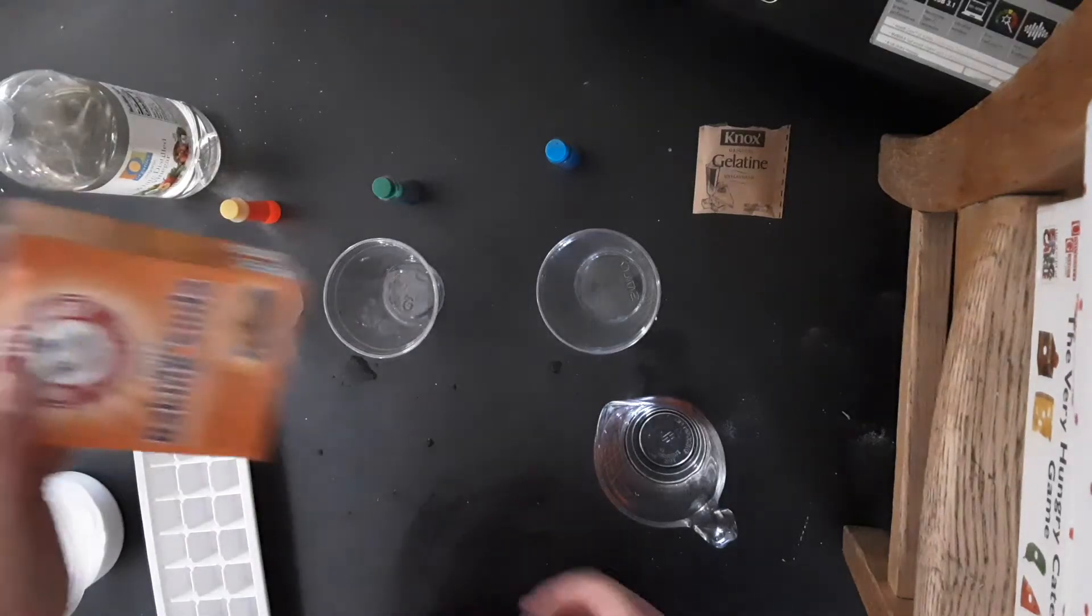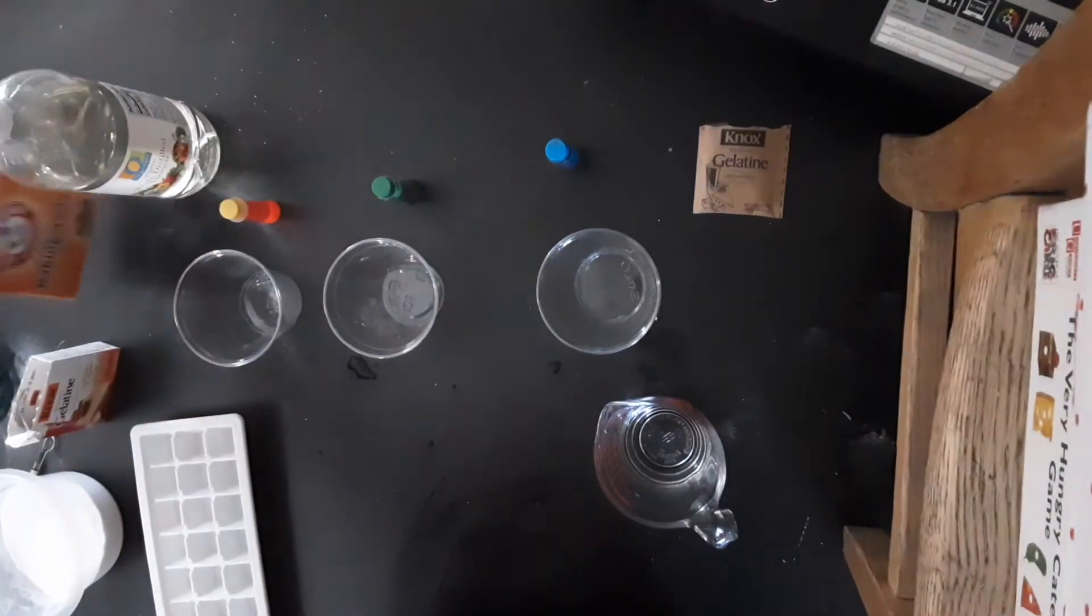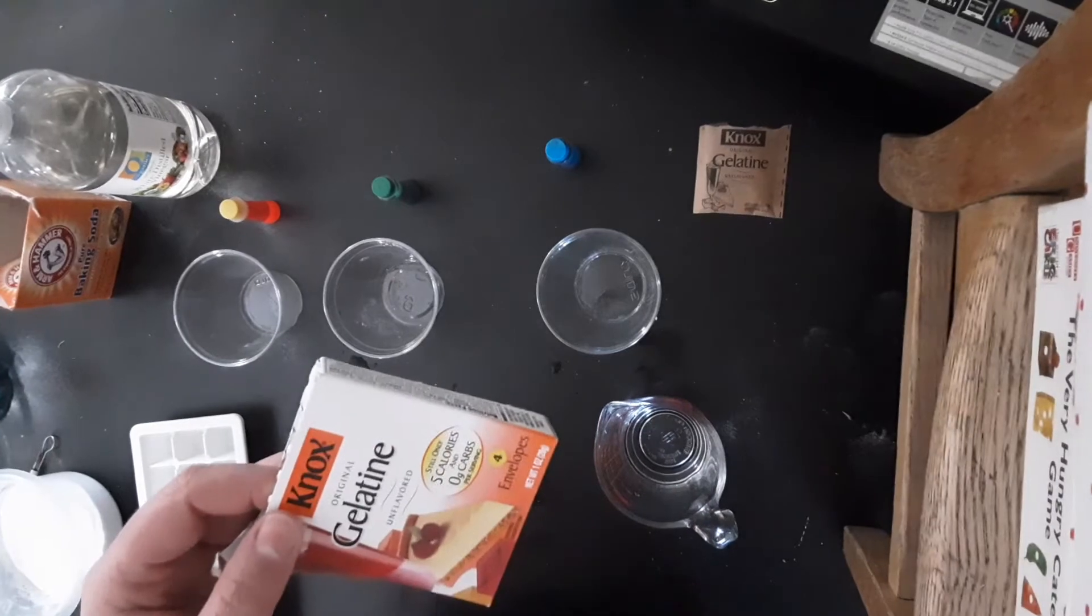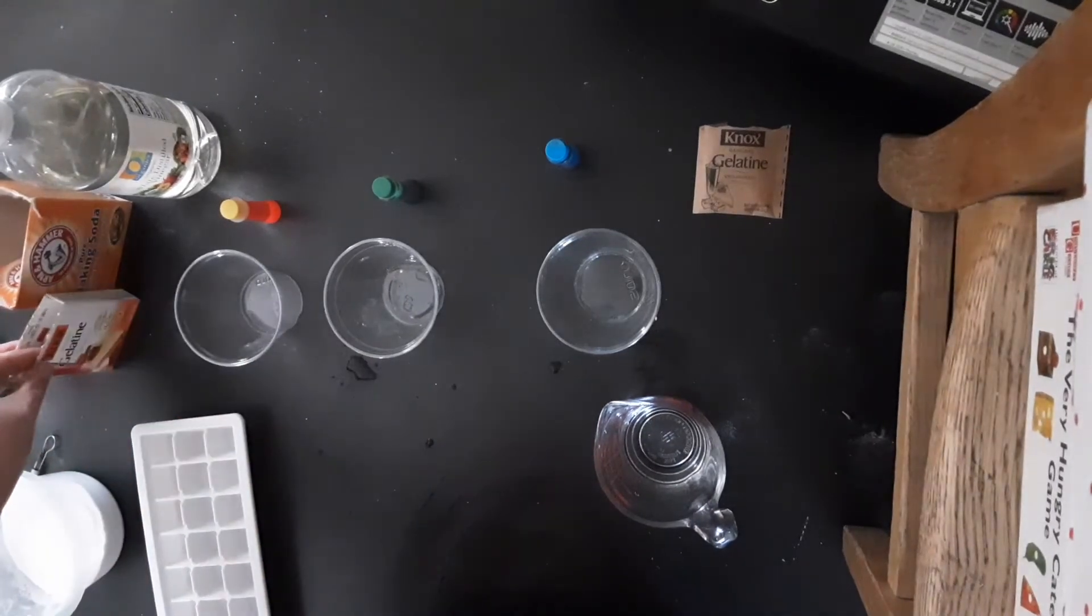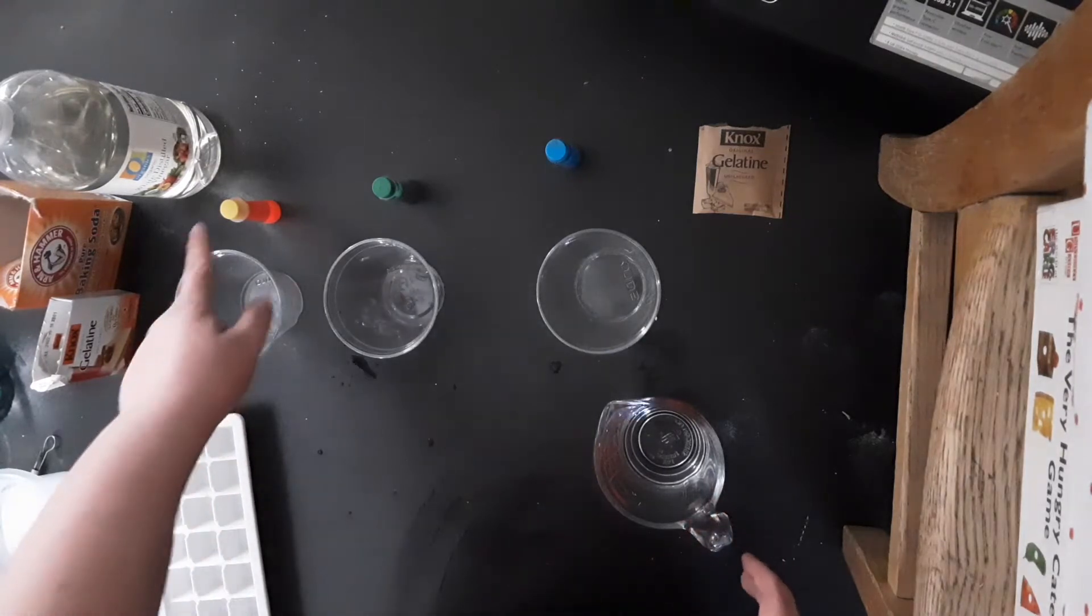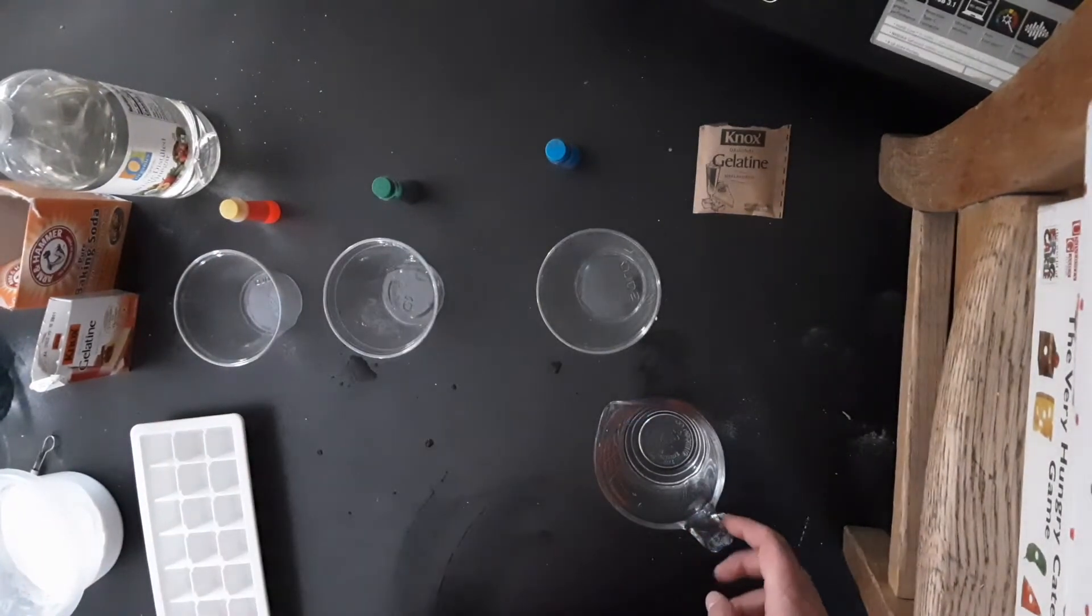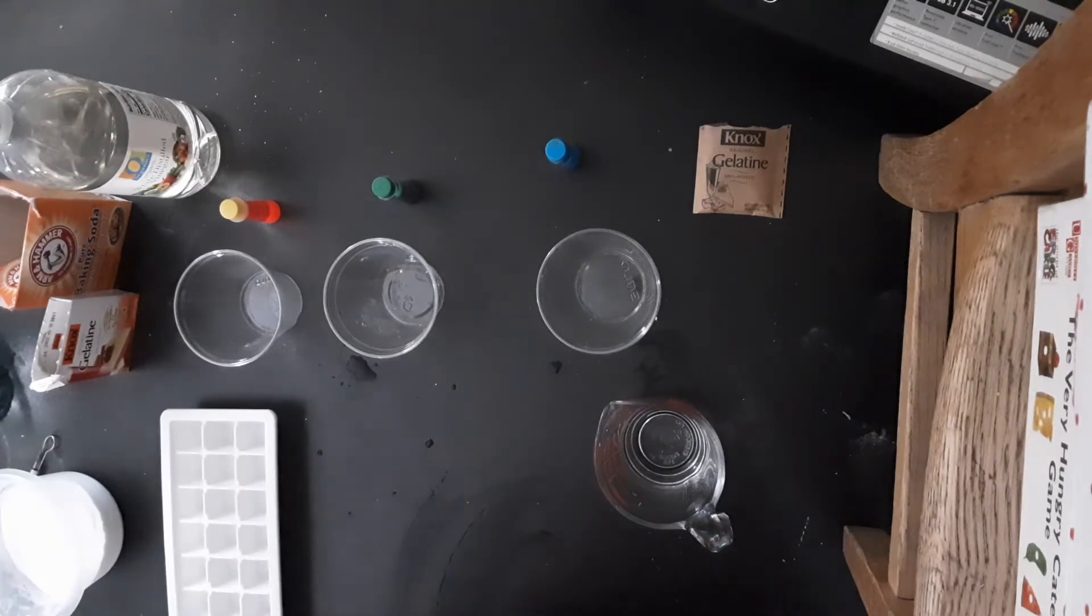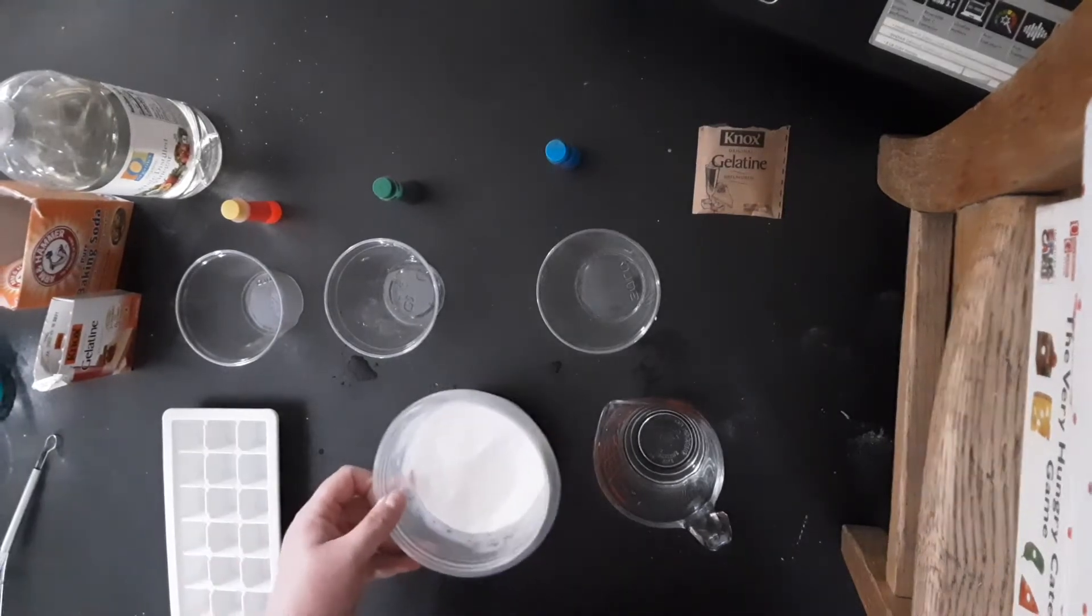What you will need is one cup baking soda, one teaspoon unflavored gelatin, food coloring of your choice, a quarter cup of water, an ice cube tray, some vinegar for later, and a bowl to mix your dry materials in.